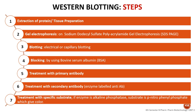The secondary antibody is labeled with an enzyme. Finally, treatment with a specific substrate produces a visible color. This color result is the ultimate output of the Western blotting technique.